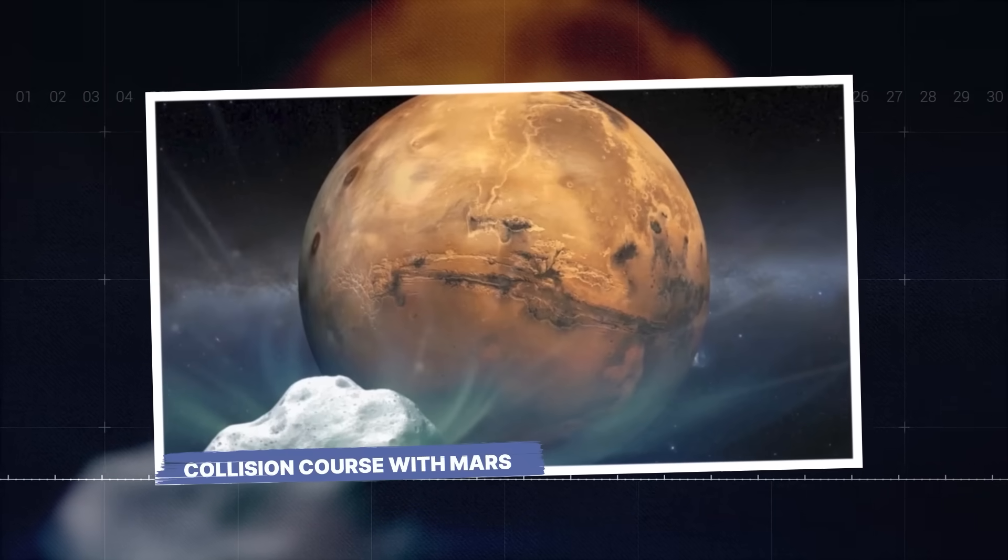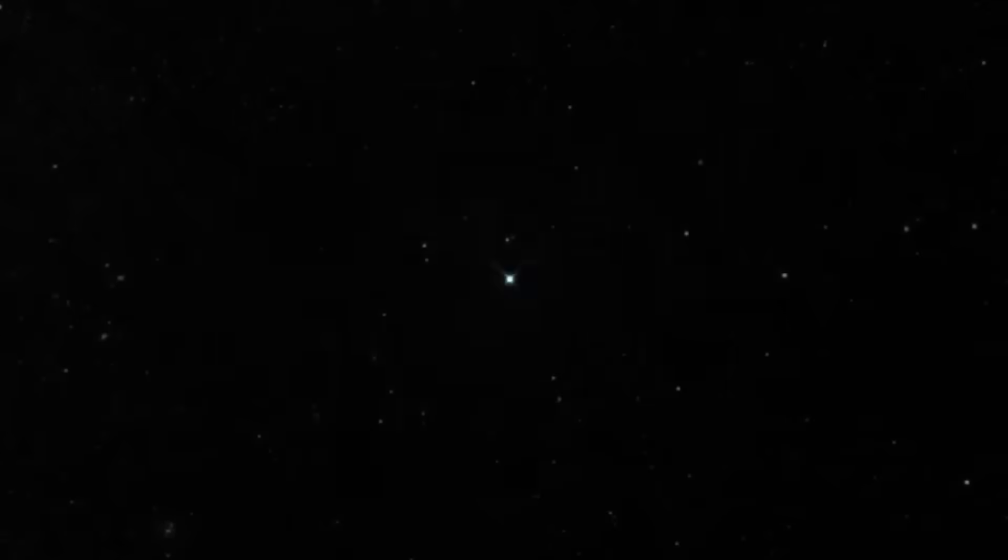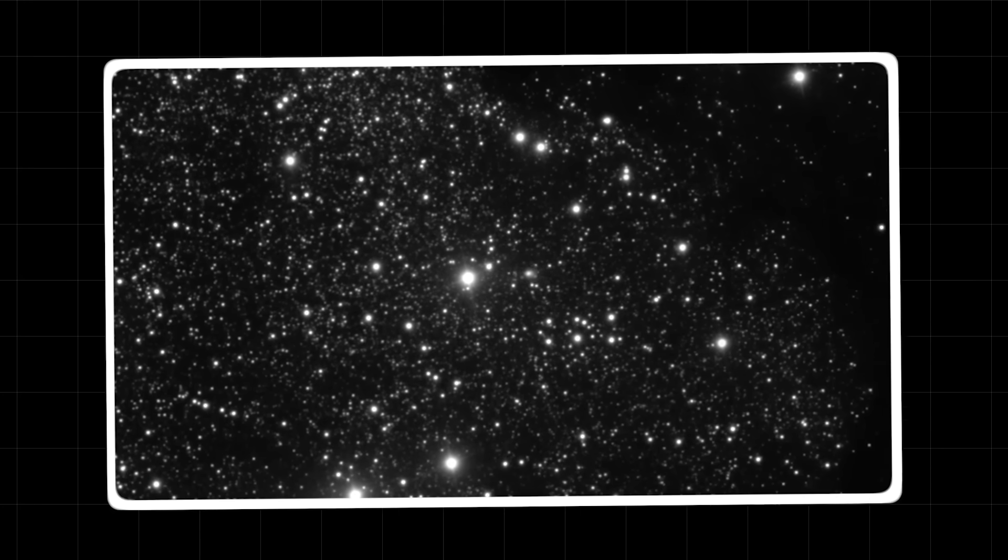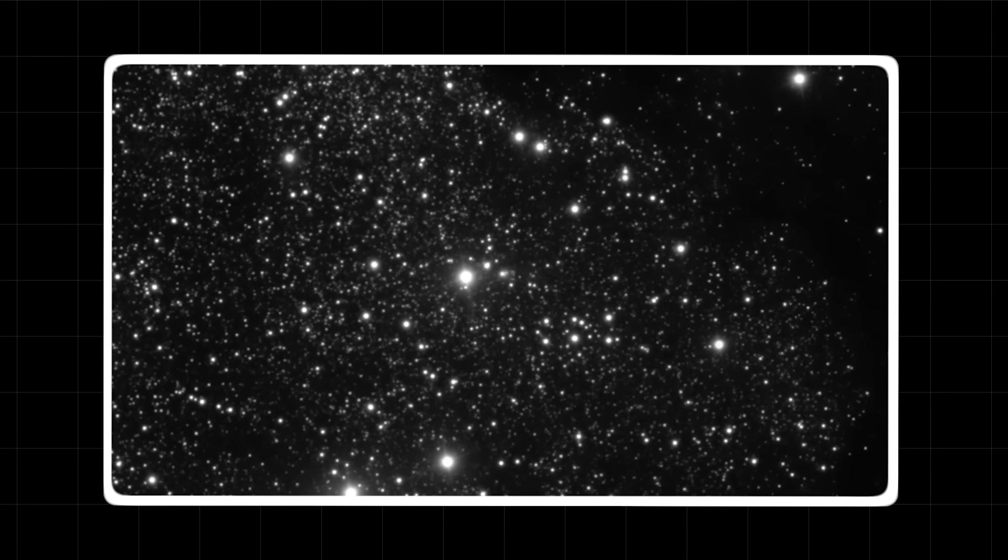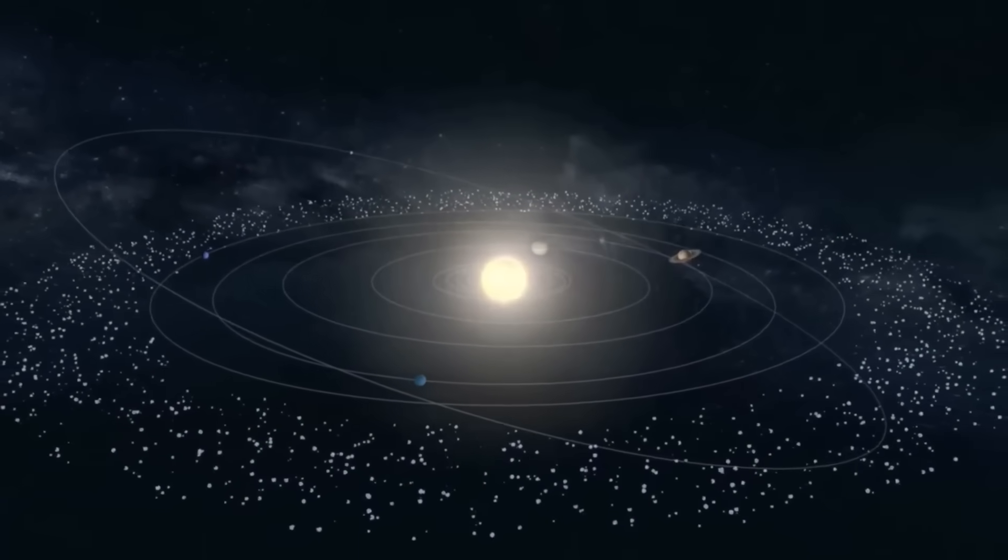In the vast, silent expanse of space, where stars are born and die in a cosmic ballet of unimaginable scale, a lone traveler has emerged from the interstellar darkness. This isn't just any piece of rock or ice. This is 3i Atlas, a messenger from a distant unknown star system. For years, it journeyed through the void, a silent testament to the mysteries that lie beyond our own solar system.